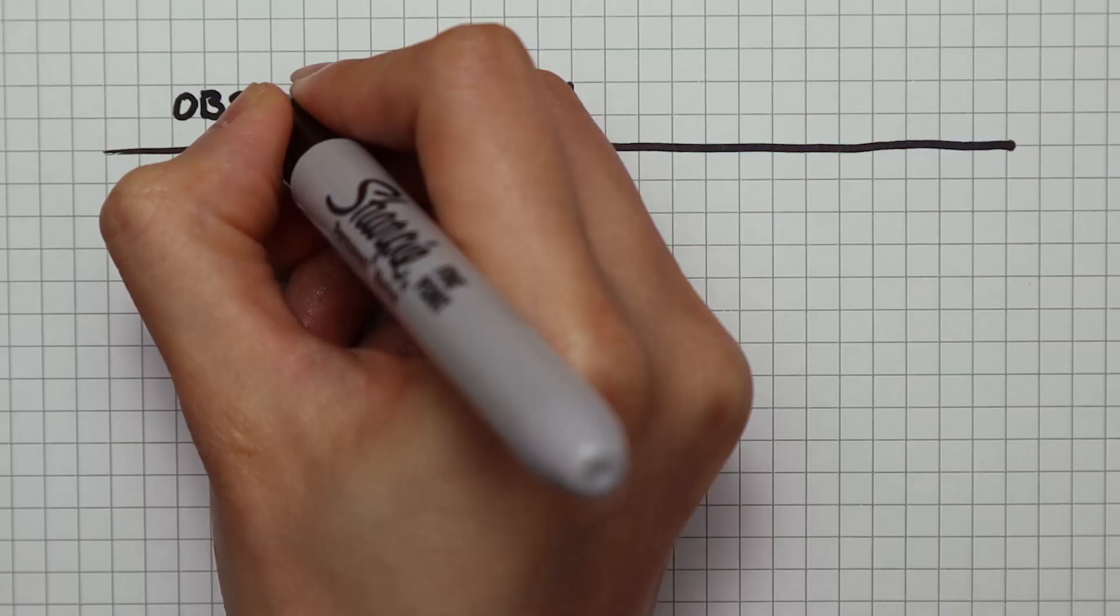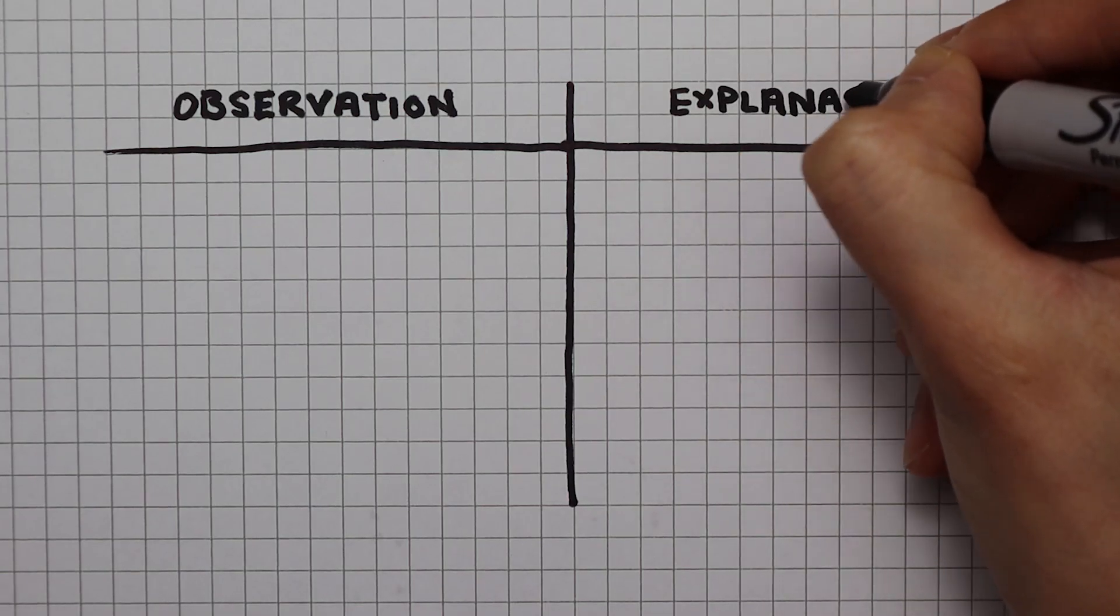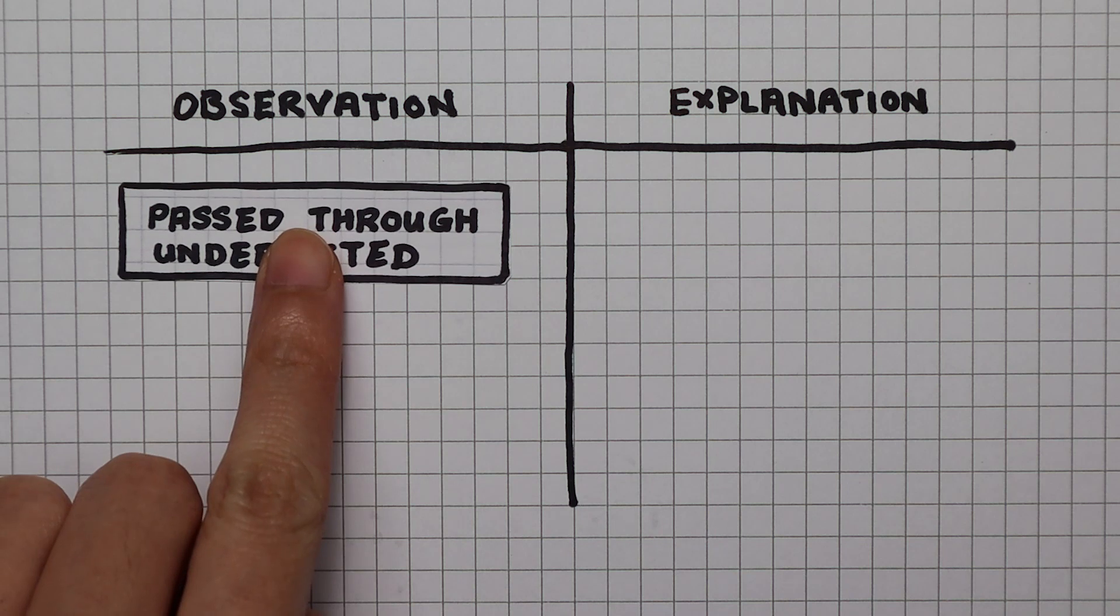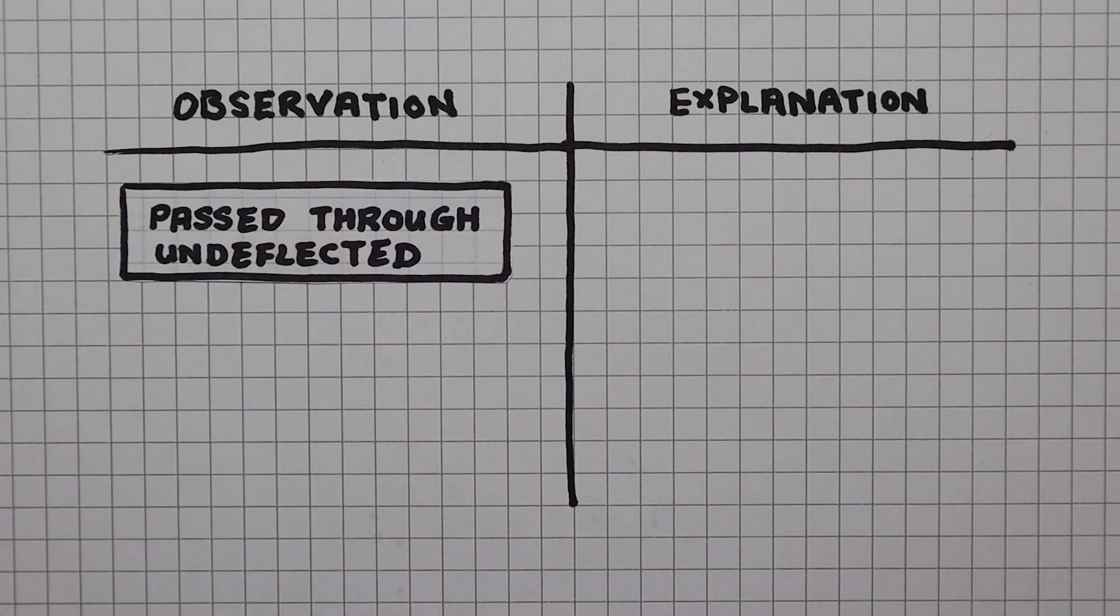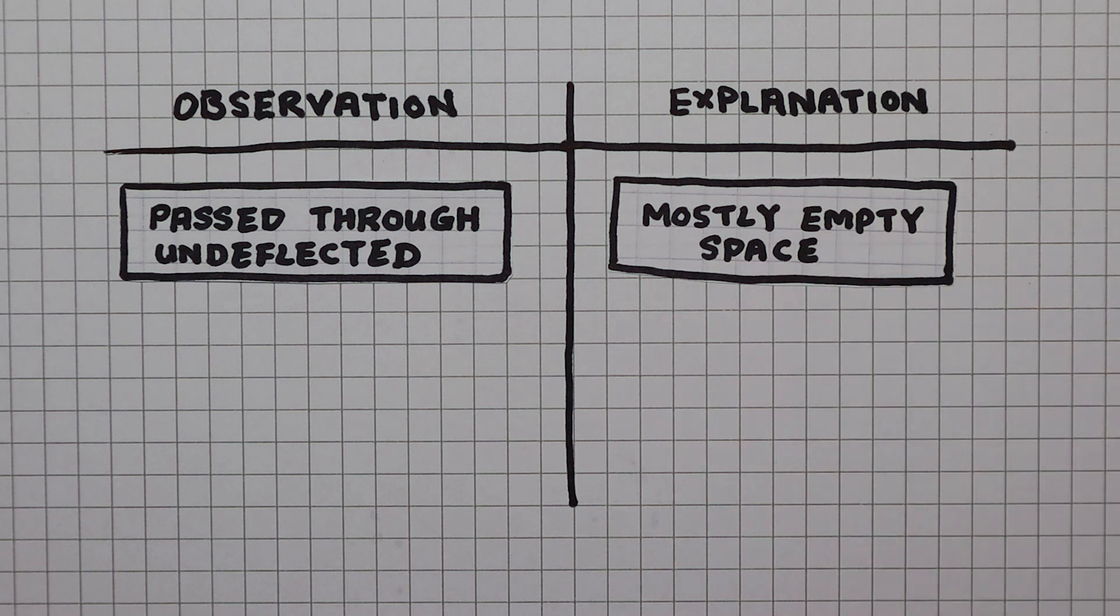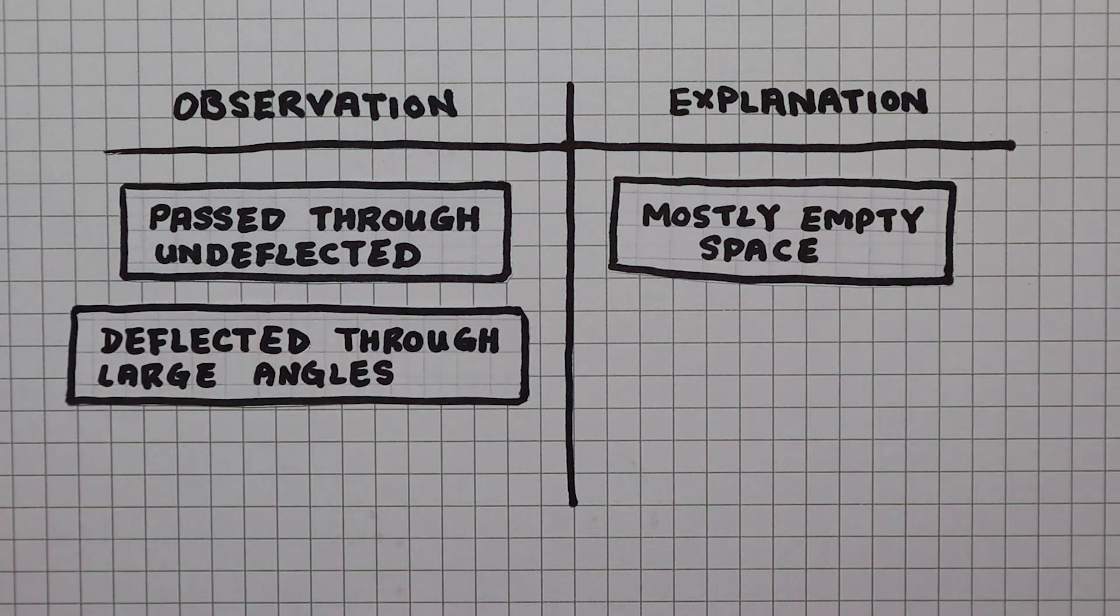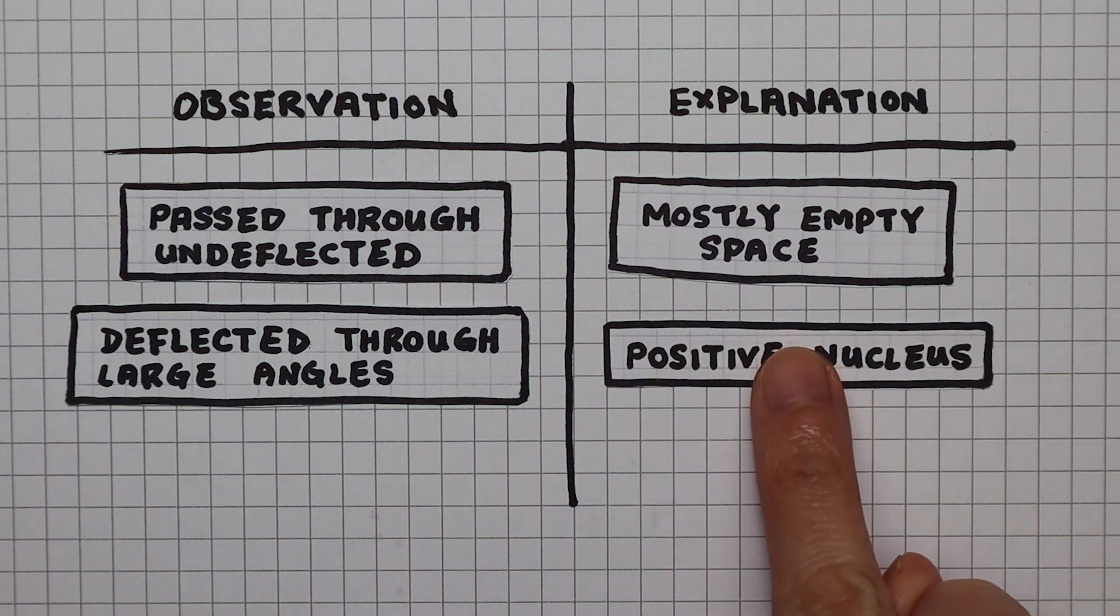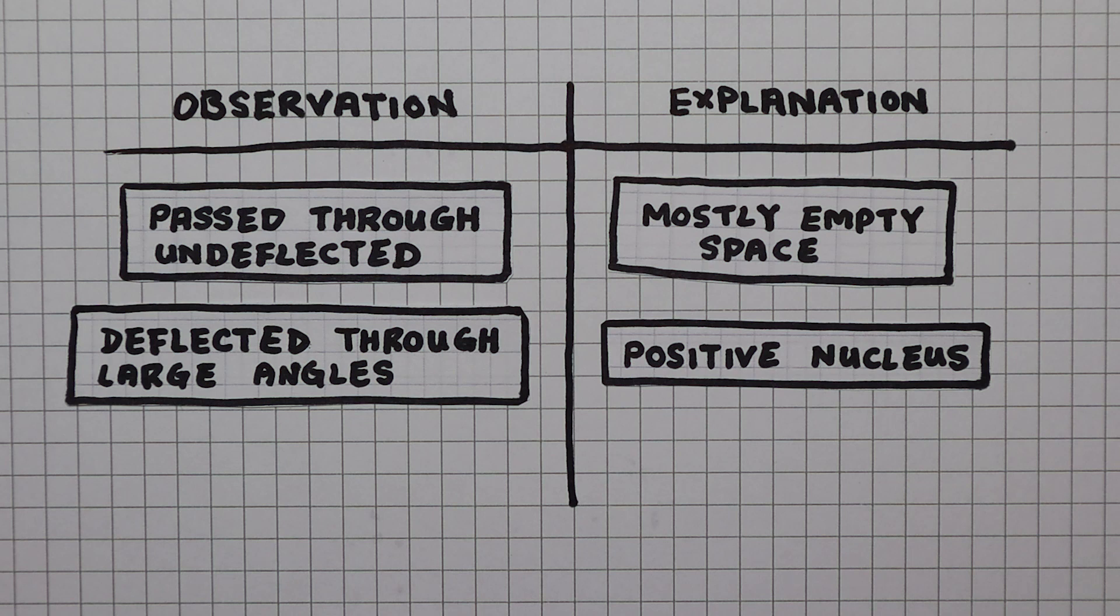Let's put his observations and explanations side by side. Most of the alpha particles pass through the gold leaf undeflected. This is evidence for an atom being mostly empty space. Some alpha particles were deflected through very wide angles. This shows that the atom contains a small, dense region of positive charge.